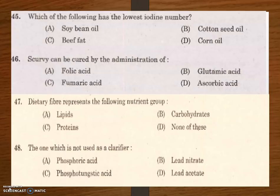Next question: dietary fiber represents which of the following nutrient groups? Options are lipids, carbohydrates, proteins, and none of these. Dietary fiber comes under the nutrient group of carbohydrates — it is a type of carbohydrate found in cereals, fruits, vegetables, dried peas, nuts, lentils, and grains.